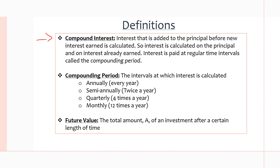A compounding period is an interval at which interest is calculated. The most common compounding periods are: annually, where interest is earned every year; semi-annually, where you earn interest twice a year; quarterly, where you earn interest four times a year; and monthly, where you earn interest every month, 12 times a year.